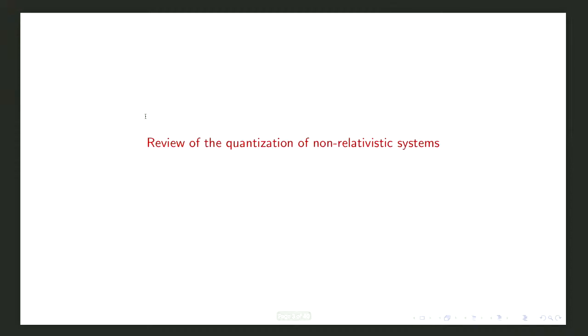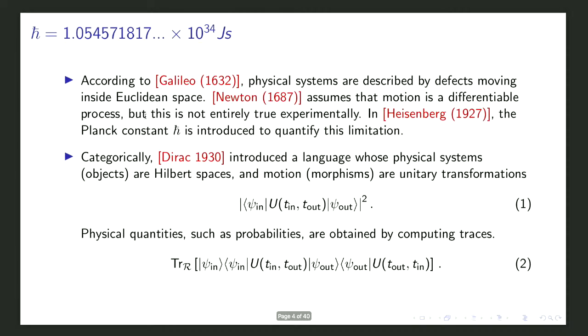First I'll review the quantization of non-relativistic systems, just to fix the language so everyone understands what I'm talking about. According to Galileo, physical systems are described by objects moving inside Euclidean space. Newton assumes that this motion is differentiable, but that's not entirely true experimentally. Heisenberg introduced the Planck constant to fix that, and Dirac improved this language by assigning to physical systems a Hilbert space, replacing the idea of motion by morphisms.